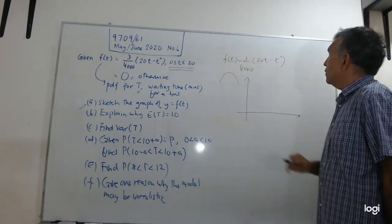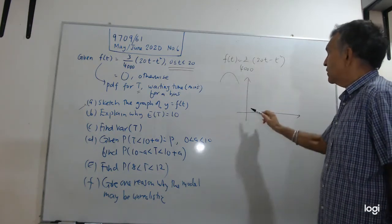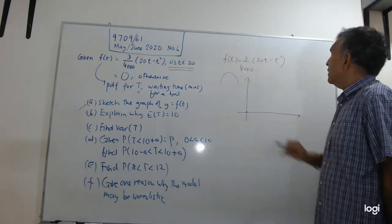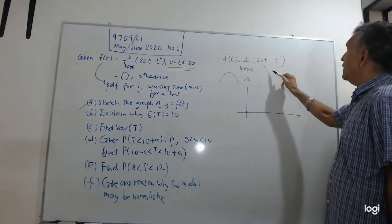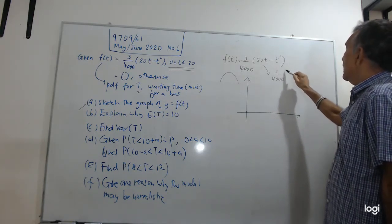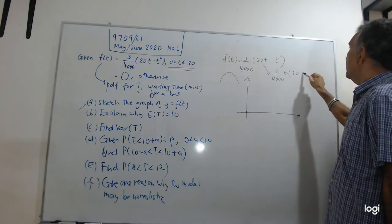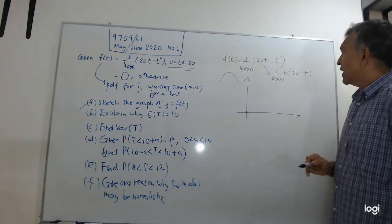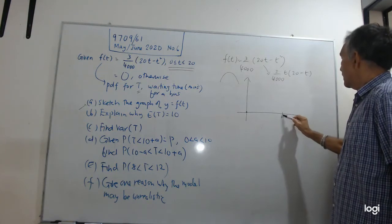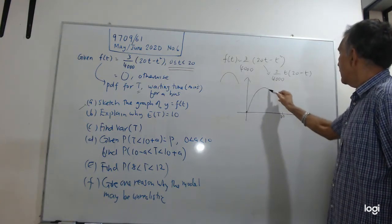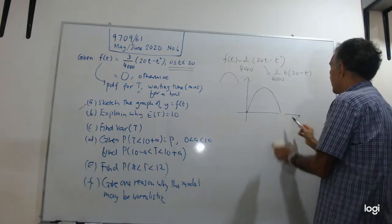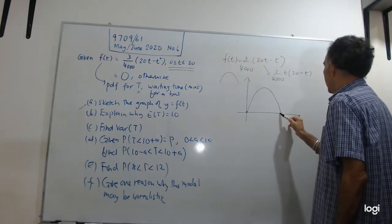So when T is 0, when T is 0, f(T) is 0, so it passes through the origin. And from your density function, you can see it is 3 over 4000. And if you take out one T, you'll get 20 minus T. So it cuts the T axis at 0 and 20. So your curve will be, let me just sketch that again.